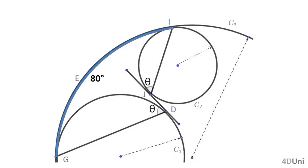When we try to solve a problem, we have to ask ourselves if we know a relation between the unknown and the known values, which are initially the numerical information given. In this case, given the figure shown, we don't know initially a formula that we can use to relate the unknown theta with the known angular measure of the arc GEI, that is 80 degrees.